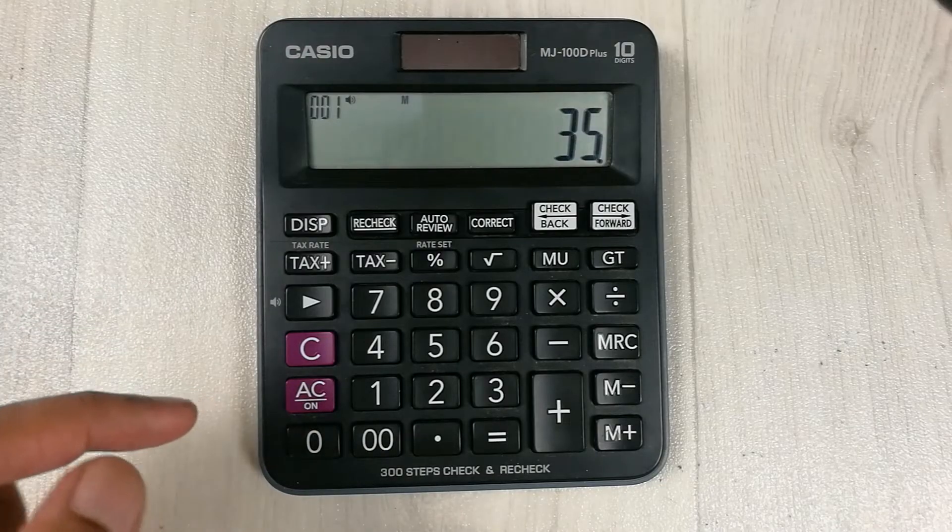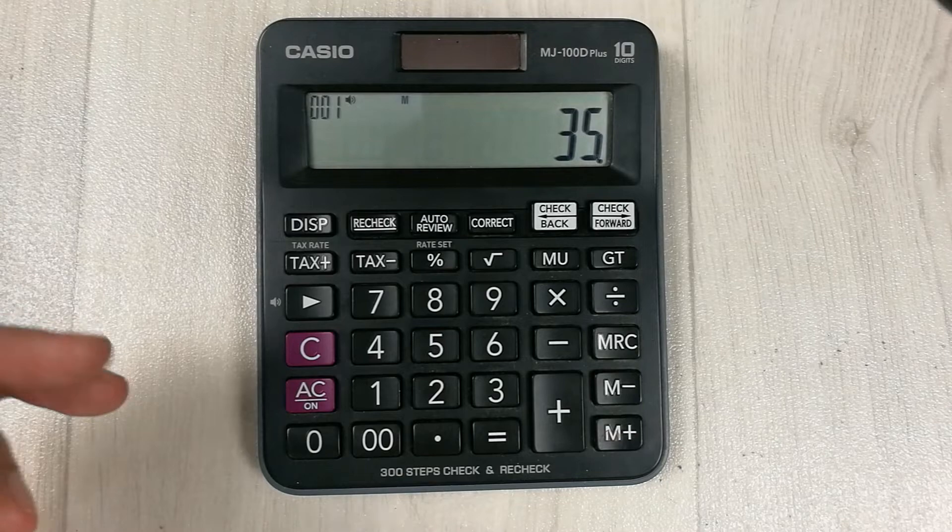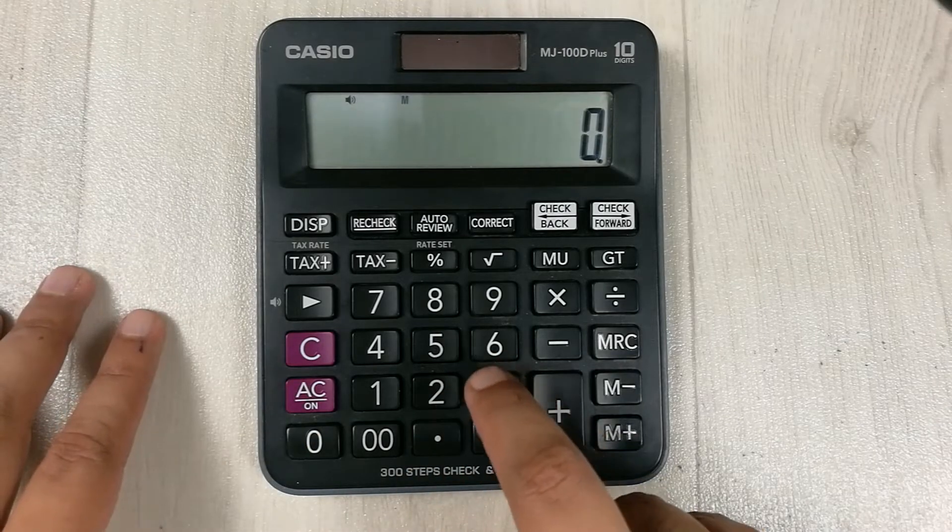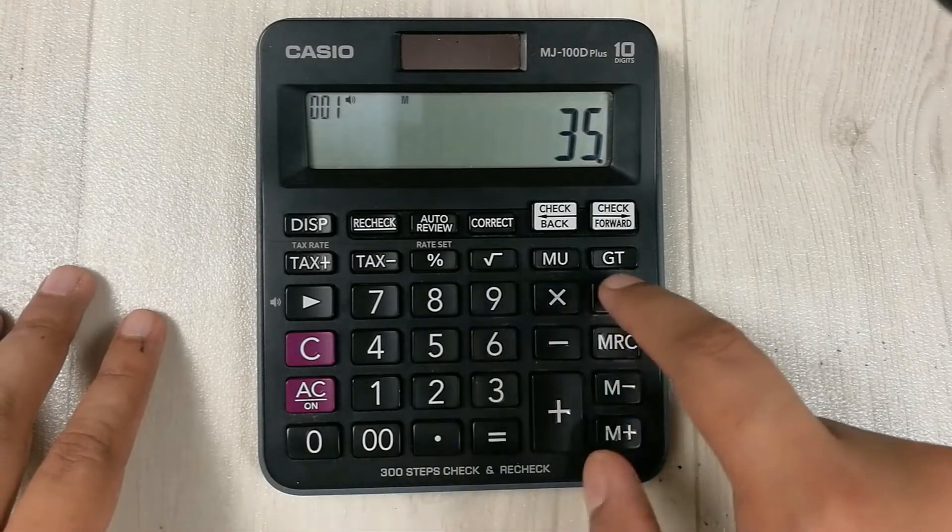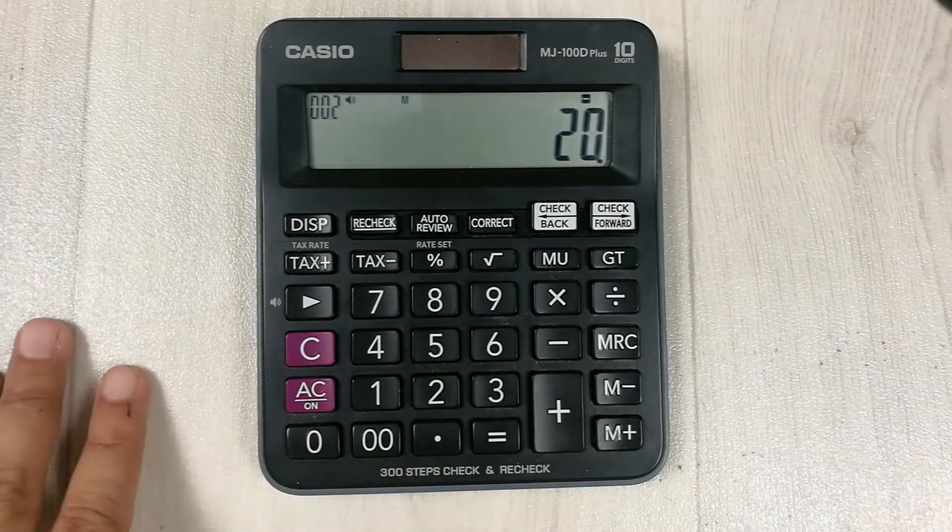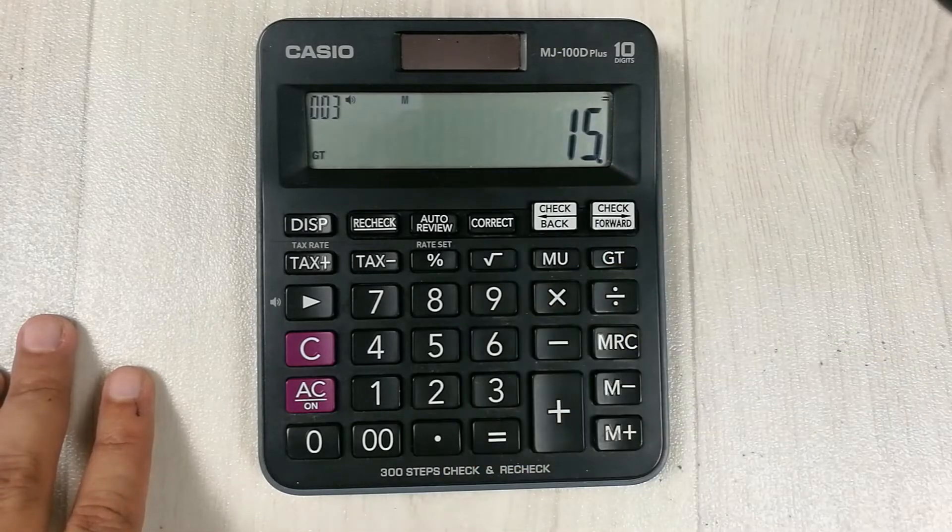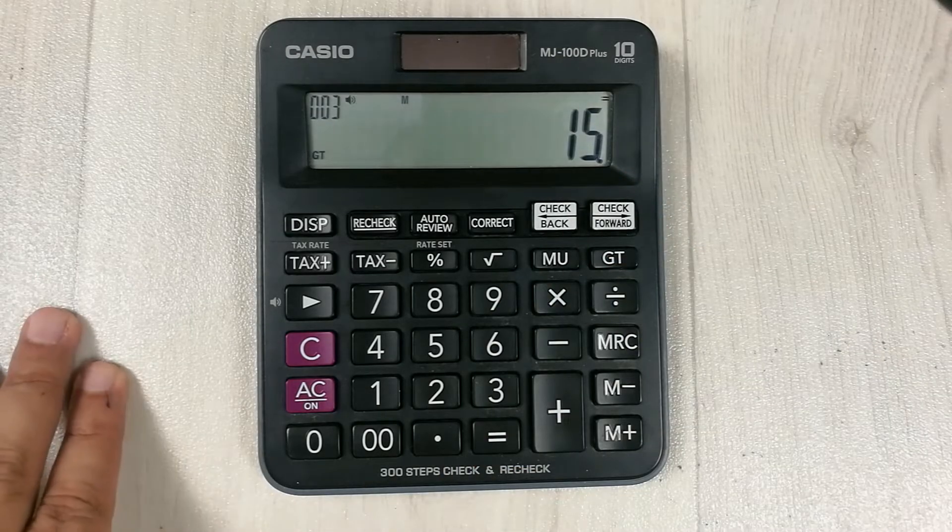In the first step, we subtract the cost price from the selling price. So the selling price was 35 and we minus it with cost price which was 20, and then we press the equals button. So 15 is our profit. This is the first step.